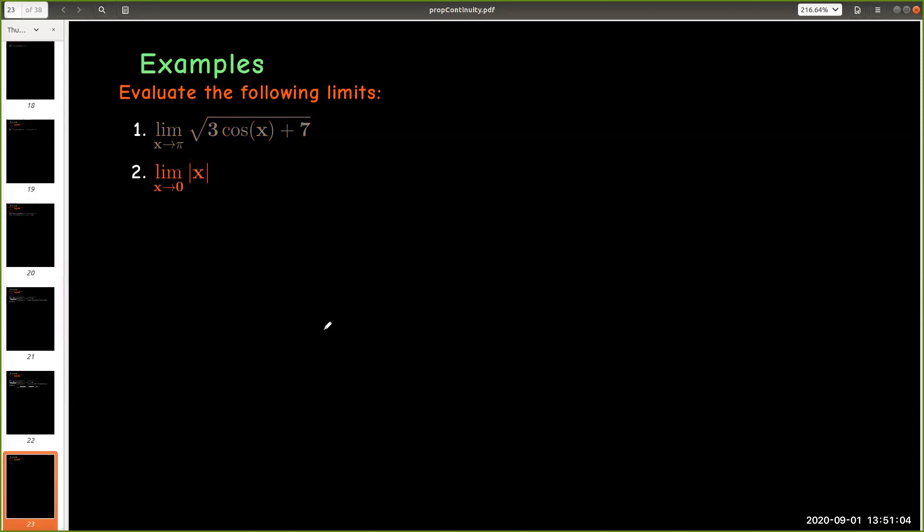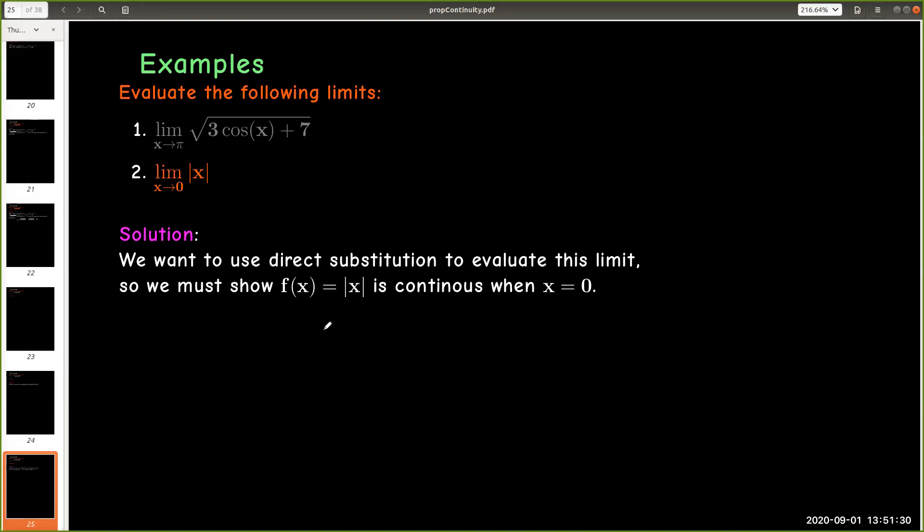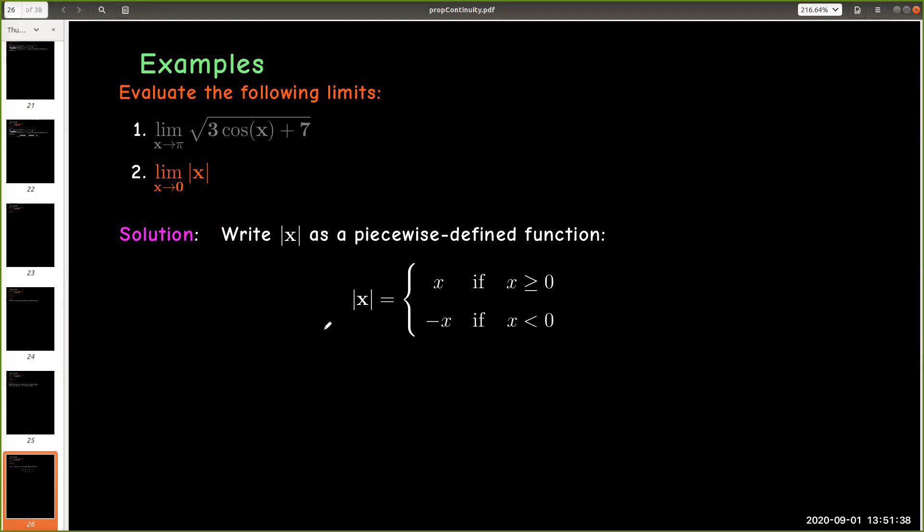In our second example, we're going to find the limit as x approaches 0 of the absolute value of x. So with absolute value functions, we'd like to be able to use direct substitution as well. And so we're going to show that it's a continuous function when x equals 0. Now there's really not any question about any other number except 0, because if I rewrite the absolute value of x as a piecewise defined function, each branch is a polynomial. And so it's clear that for every value except for 0, the absolute value of x is continuous.